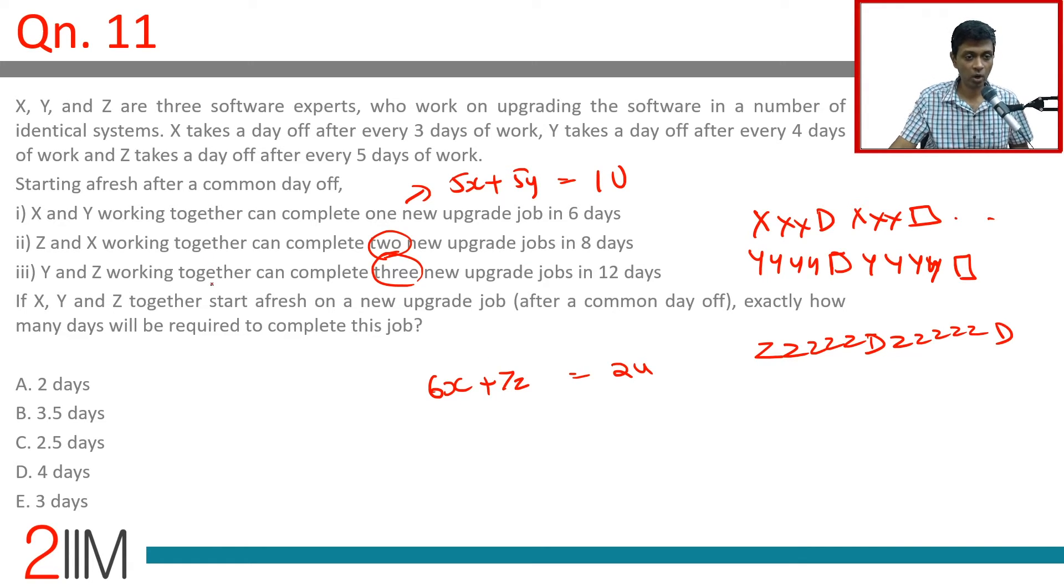Y and Z working together can complete three new upgrade jobs in twelve days. In twelve days, Y will work, Y will get two days off. Every five days he gets one day off, so ten days of Y. Z will also get only two days off, so ten days of Z is three.